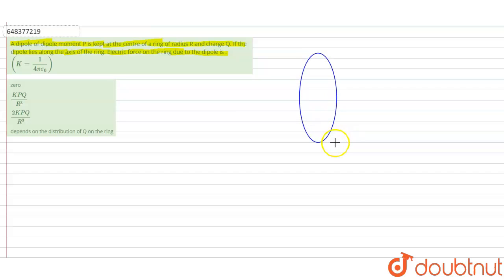Consider this as the ring, the radius is r and it has charge q, total charge is q and there is a dipole here. This will be the center and there is a dipole here, it is along the axis of the ring and the dipole moment is p.